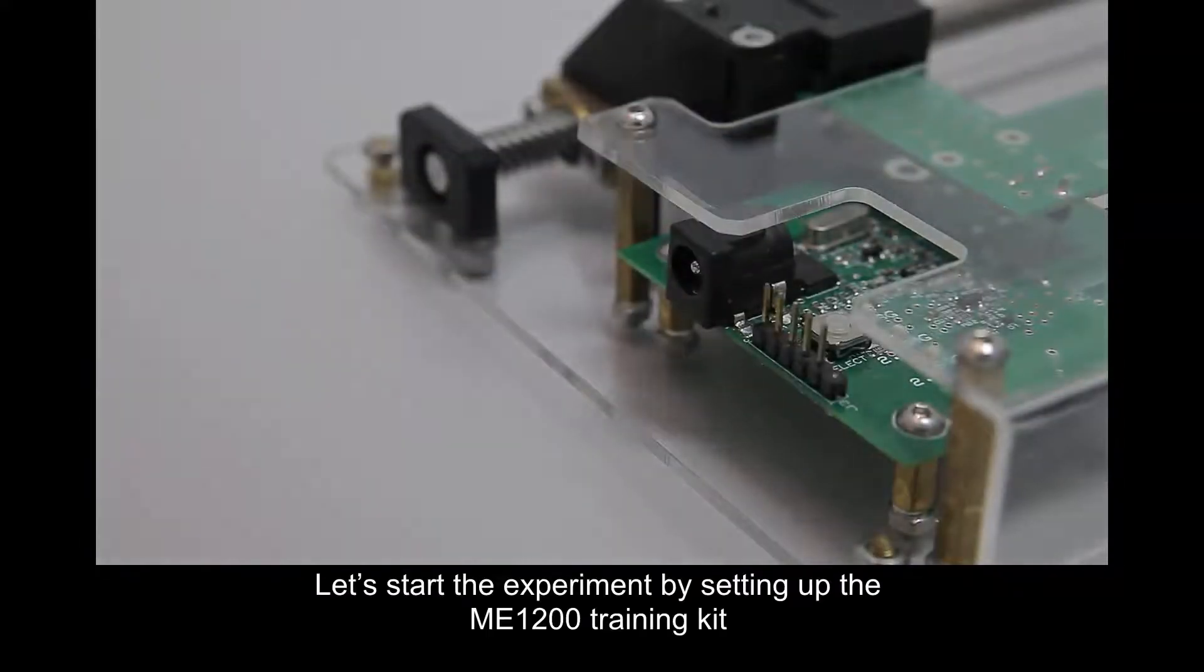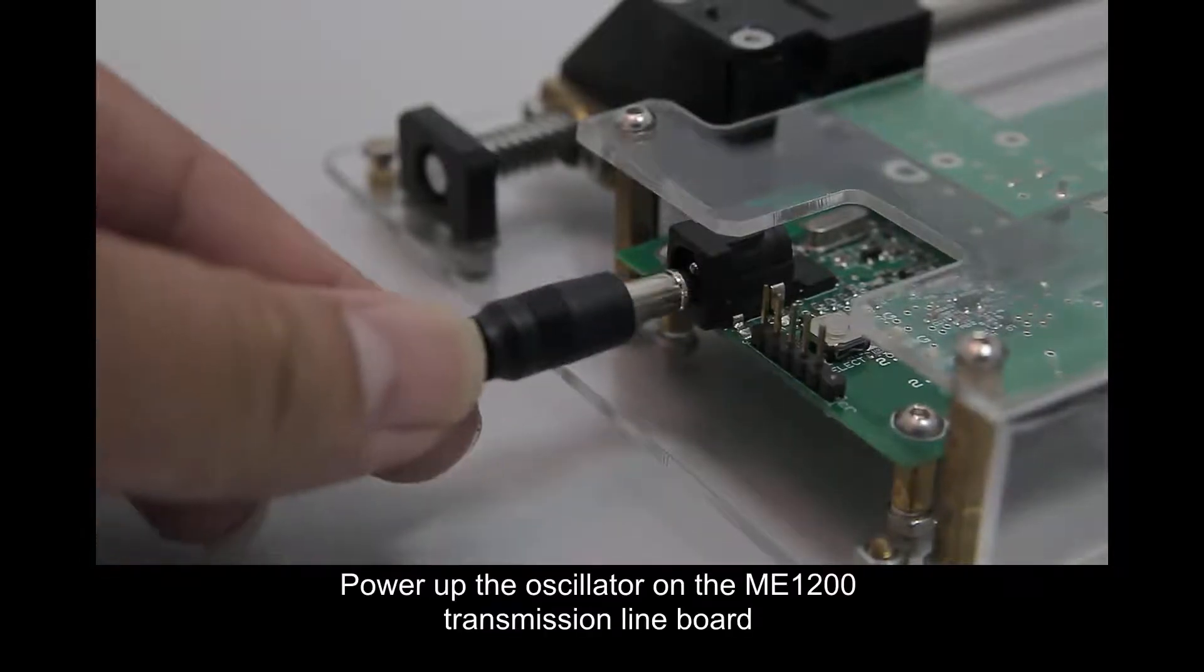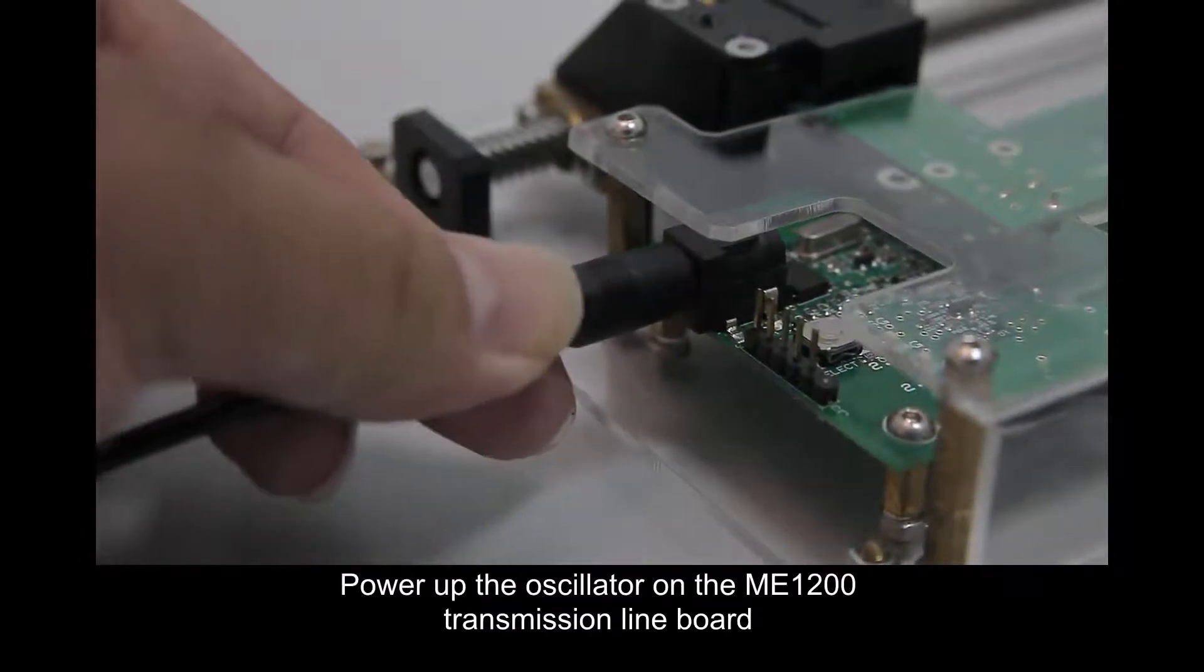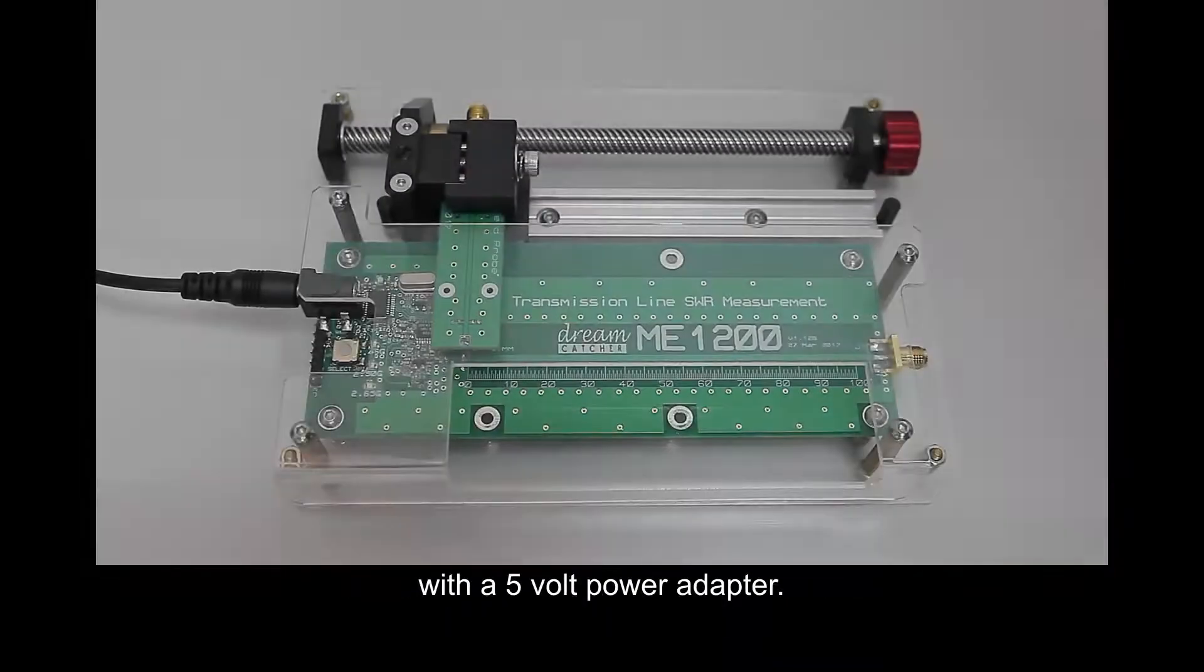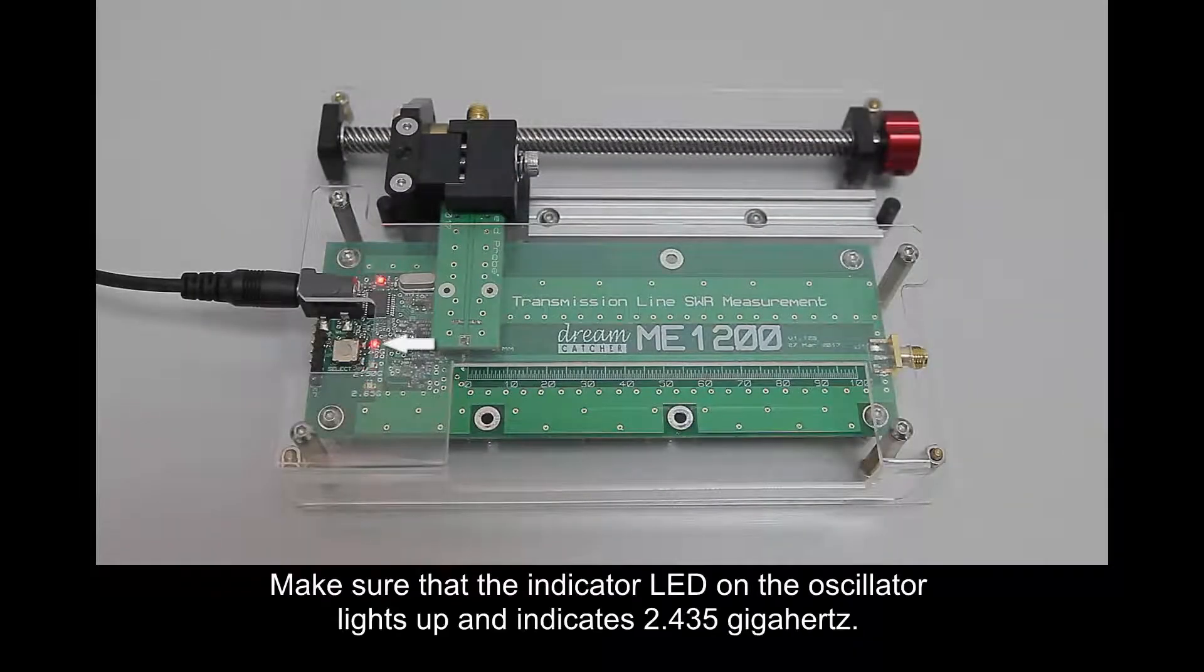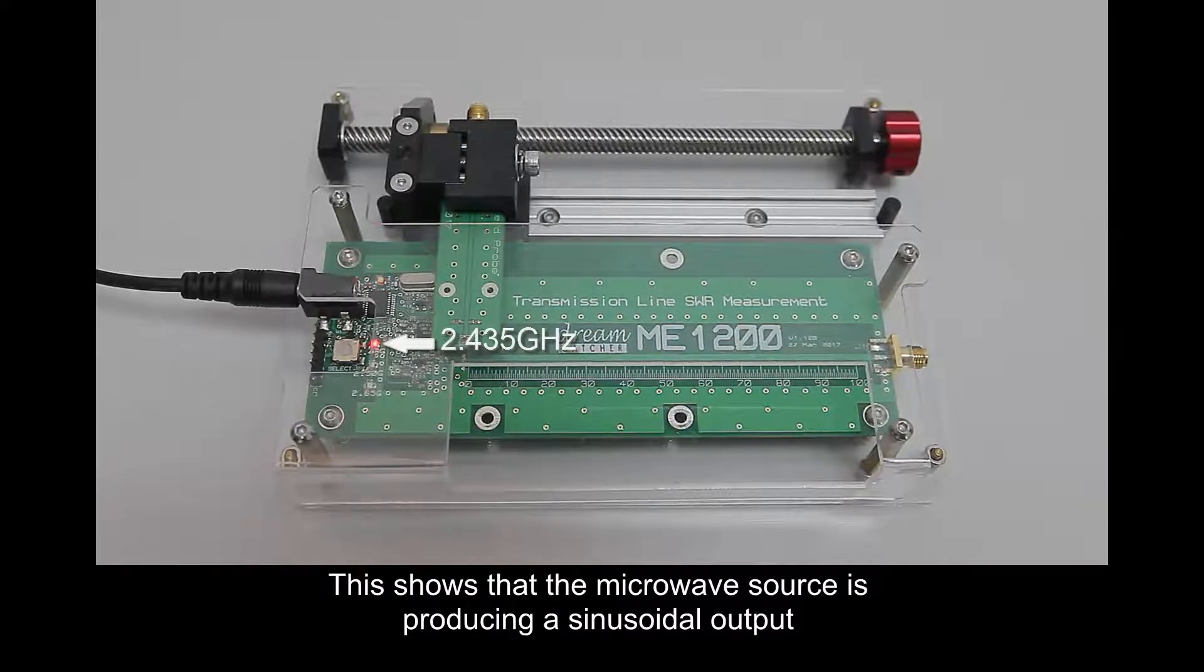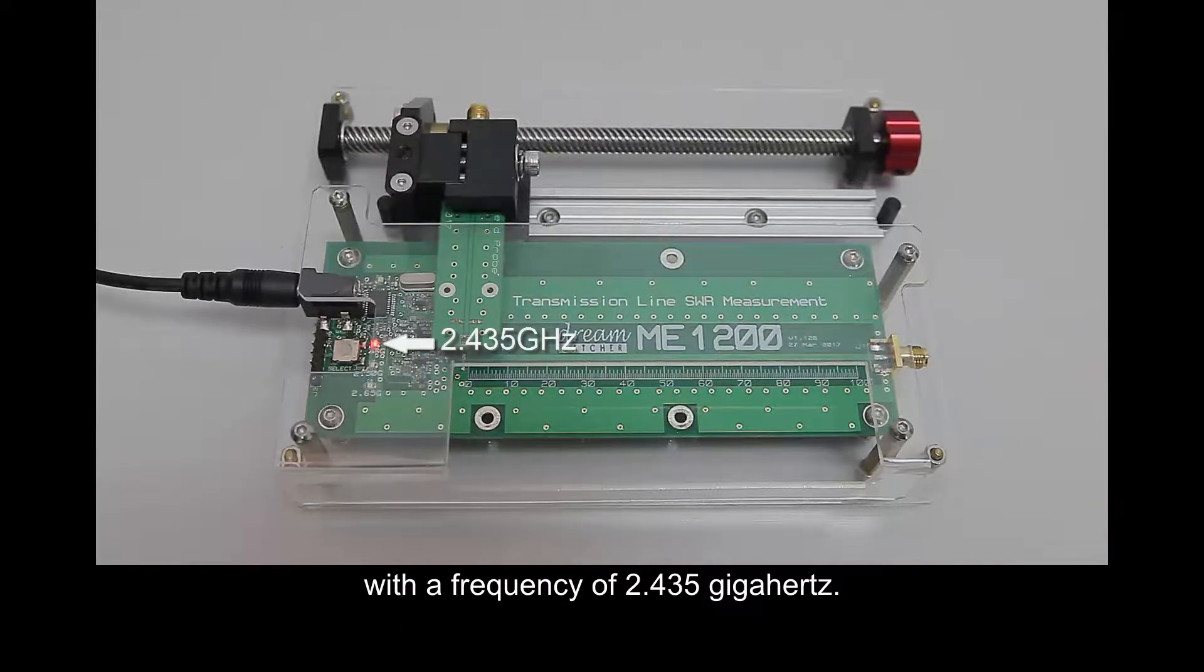Let's start the experiment by setting up the ME1200 training kit with Keysight U2000A power sensor. Power up the oscillator on the ME1200 transmission line board with a 5 volts power adapter. Make sure that the indicator LED on the oscillator lights up and indicates 2.435 GHz. This shows that the microwave source is producing a sinusoidal output with a frequency of 2.435 GHz.